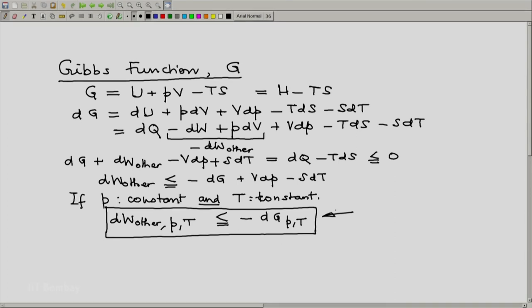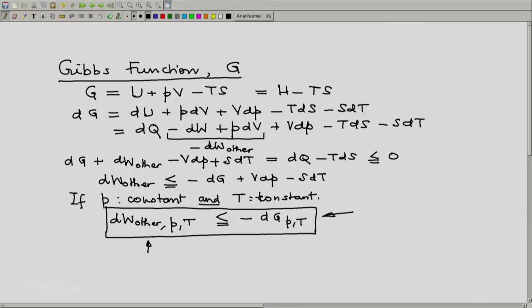So this tells us that in a fashion similar to that of the Helmholtz function, the Gibbs function also represents a sort of potential, the decrease in which represents the maximum work other than expansion work which can be obtained in a constant pressure, constant temperature situation. The Gibbs function is very useful during change of phase and during chemical reactions. We will consider some situations of change of phase, but in this course, we will not be considering situations where chemical reactions take place. Thank you.